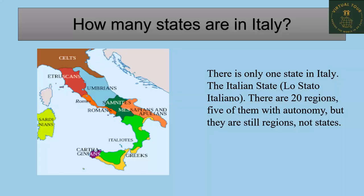Now I'll tell you about the different states in this country. Basically, there are not states here — it is just a single state. The others are considered as regions. There is only one state, named the Italian state, and the rest are regions.